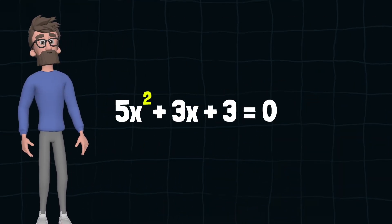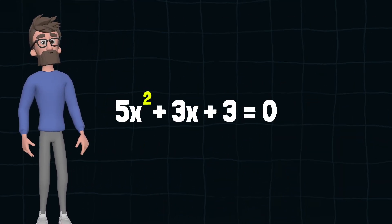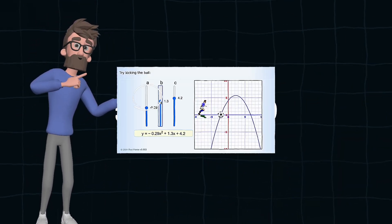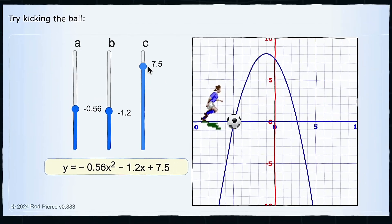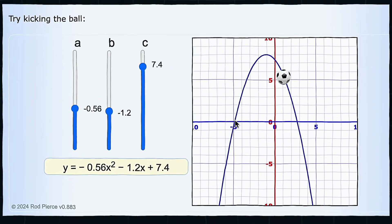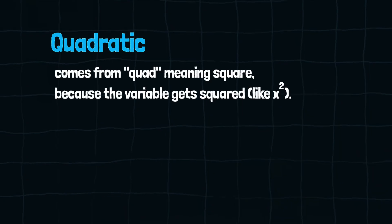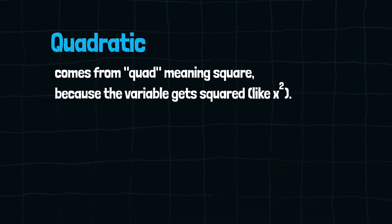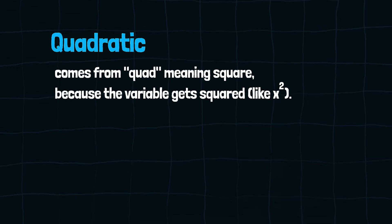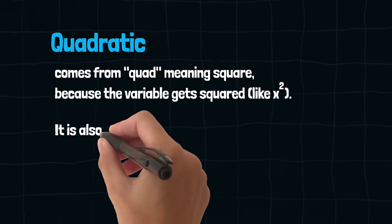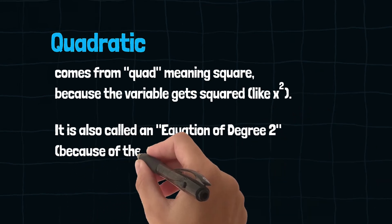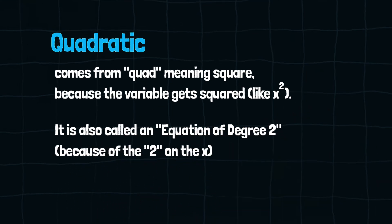An example of a quadratic equation — this is what makes it quadratic. The function can make nice curves like this one. The name quadratic comes from quad, meaning square, because the variable gets squared, like this one. It is also called an equation of degree 2, because of the 2 on the x.